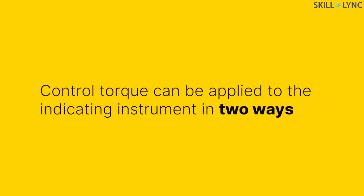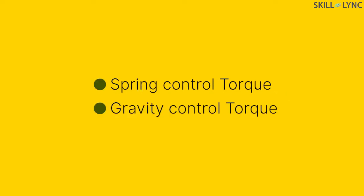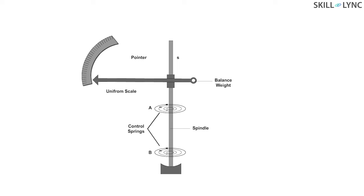Control torque can be applied to the indicating instrument in two ways: Spring control torque and gravity control torque. In spring control, two springs are wound around the spindle in the opposite direction and the pointer is attached to the spindle. These springs are conducting but non-magnetic in nature and are made of phosphor bronze material.